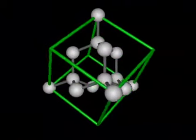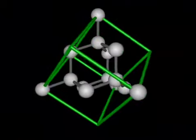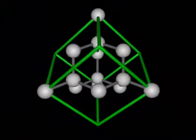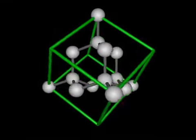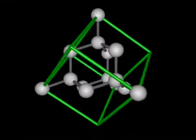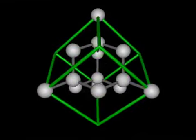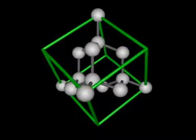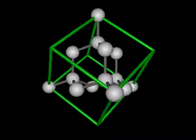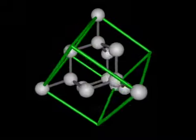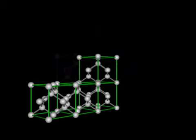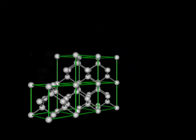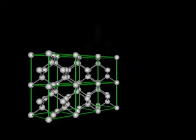By tilting and rotating the cube, this tetrahedron can be displayed in the same orientation as it was seen before. Repetition of this cube also generates the diamond structure, but from the cubic perspective.